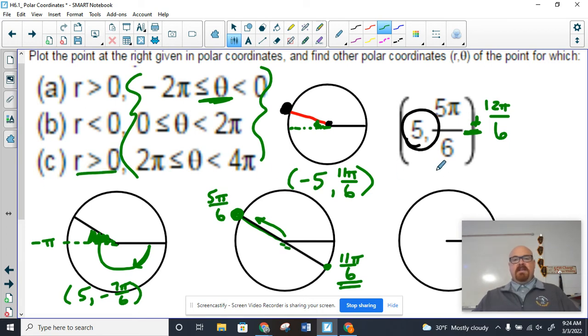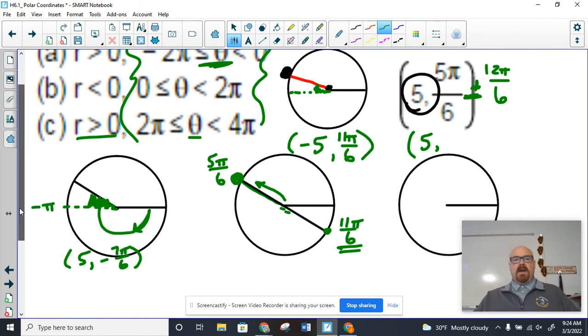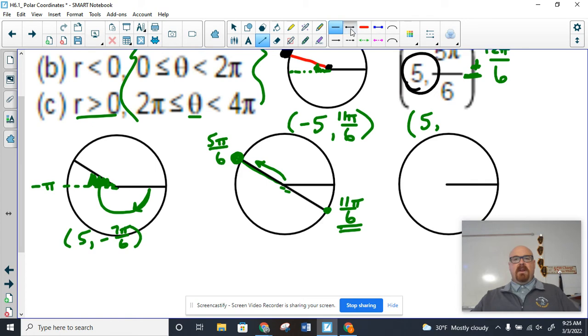Now for this next one, they want a positive R value, so we're still going to use 5. But now the angle has to be between 2π and 4π. So we're talking about an angle now that comes all the way around, doesn't stop here.